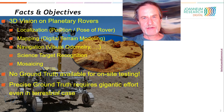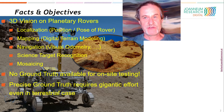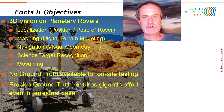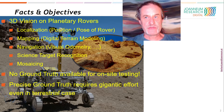3D vision on planetary rovers is the primary perception data source for localization, image-based mapping and navigation, but also for autonomous functions such as science target recognition. True mosaics for understanding the scientific context is another use case. Note that we do not have the opportunity to collect ground truth on planetary surfaces. Even in the terrestrial case, it is quite some effort to generate real ground truth, an order of magnitude more precise than the functions to be tested.